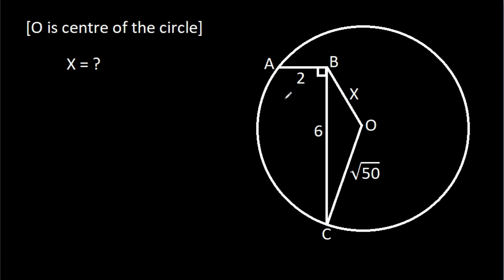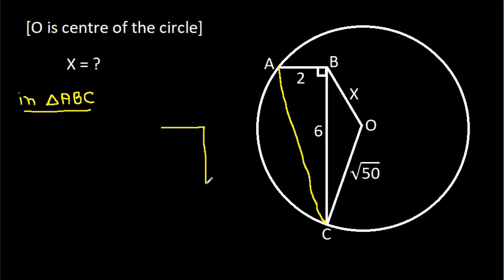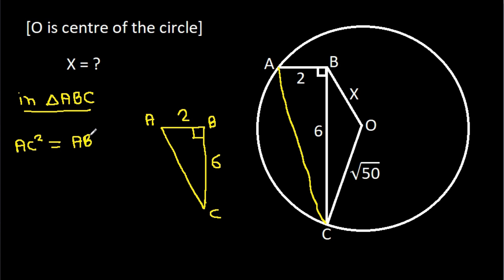So, if we join AC, then angle ABC is 90 degrees. AB is 2, BC is 6. So AC squared will be equal to AB squared plus BC squared, by the Pythagorean theorem.